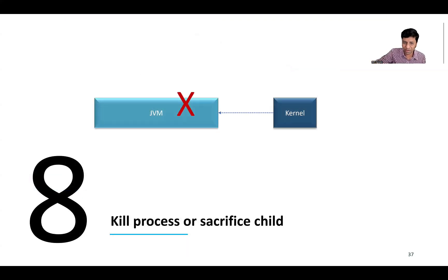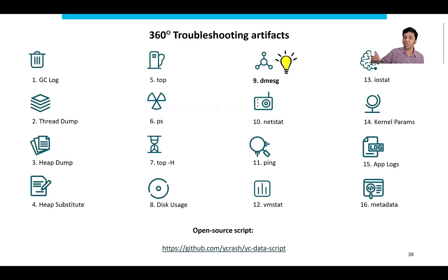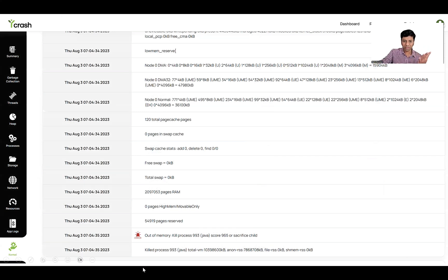The eighth type of out of memory error is 'kill process or sacrifice the child.' This happens when the kernel kills your JVM due to lack of RAM capacity — when many jobs are running and there's not enough memory, the kernel can kill your JVM and slap it with this error. Unfortunately, this error is not reported anywhere other than the kernel logs. You can get the kernel log by issuing the dmesg command. The YCrash data script captures dmesg as part of its 360-degree data. The tool analyzes it and prints: Java process has been killed.